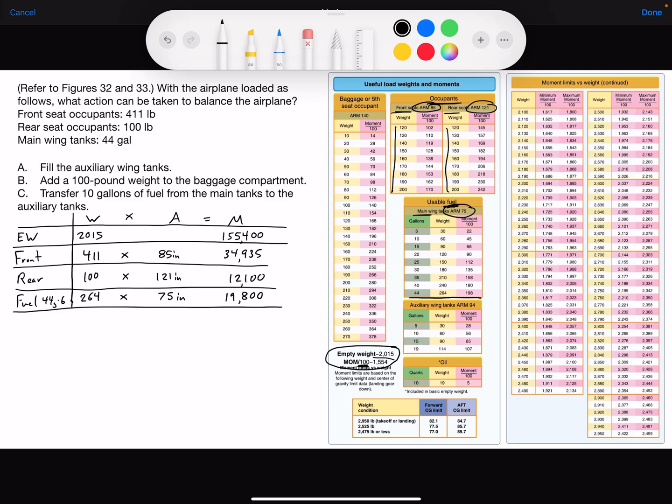Now we're going to total the weight and total the moment. And the total weight comes out to 2,790 pounds. So we are below our max weight, which is good.